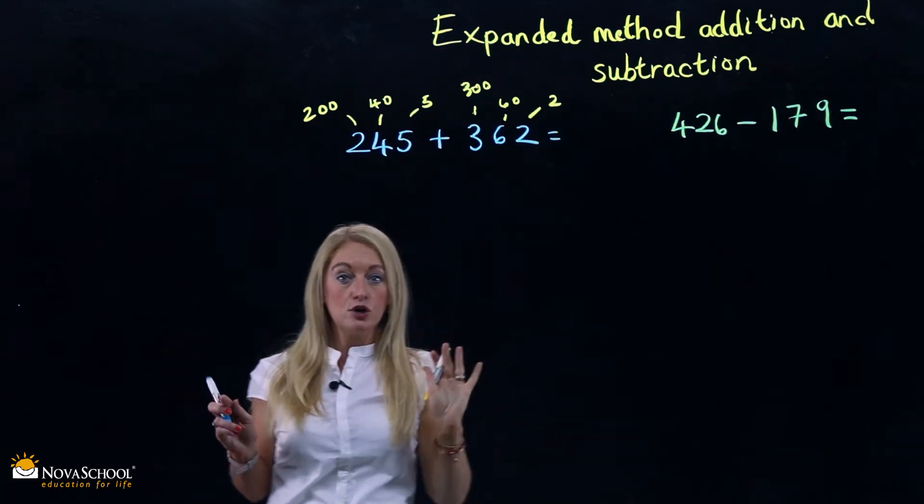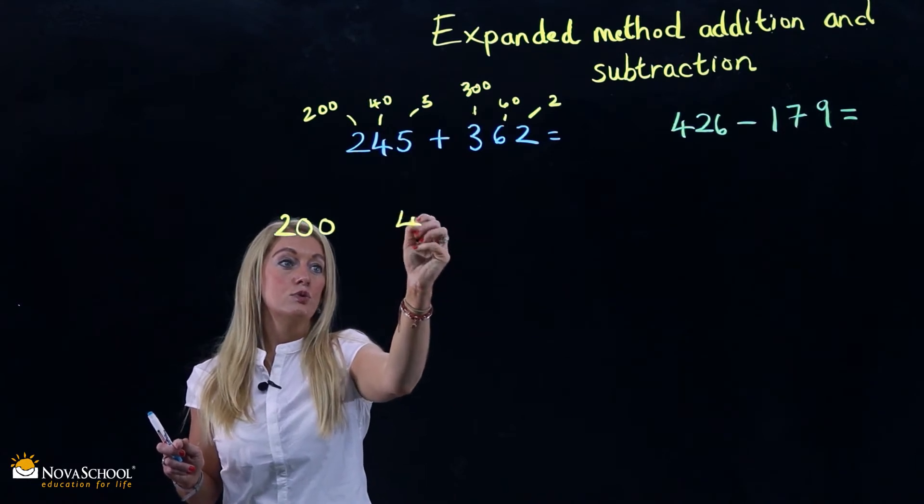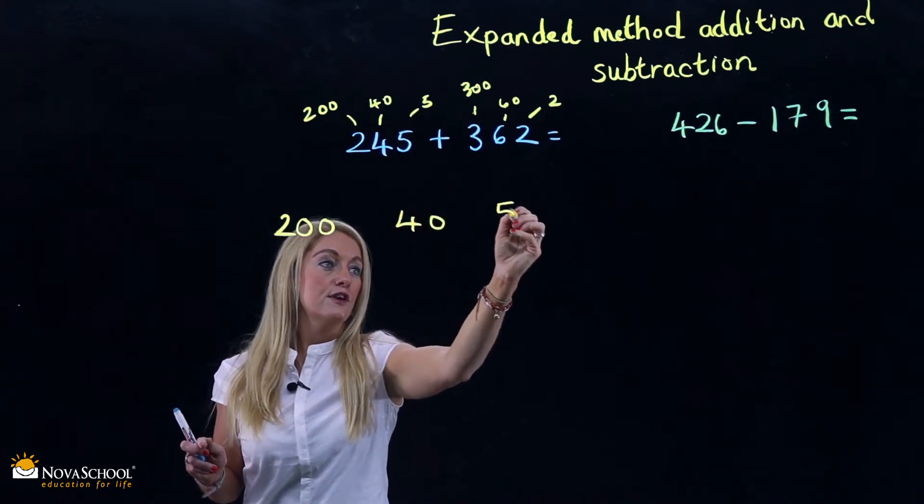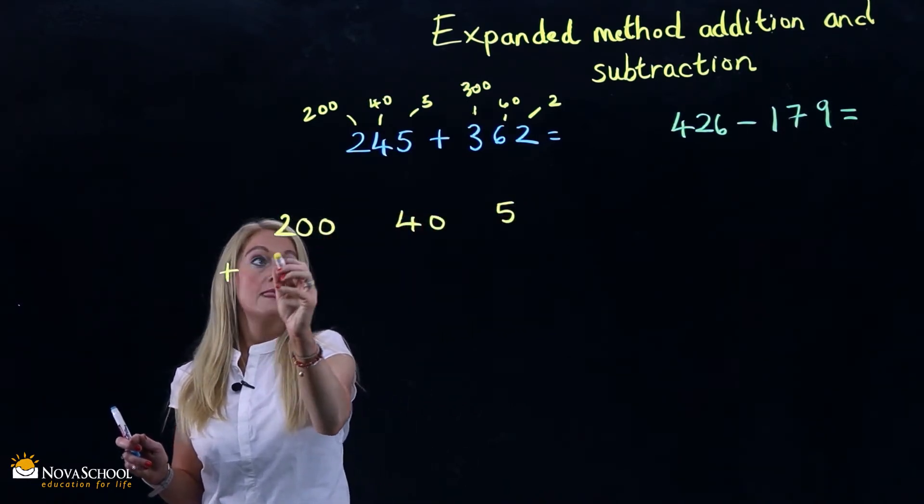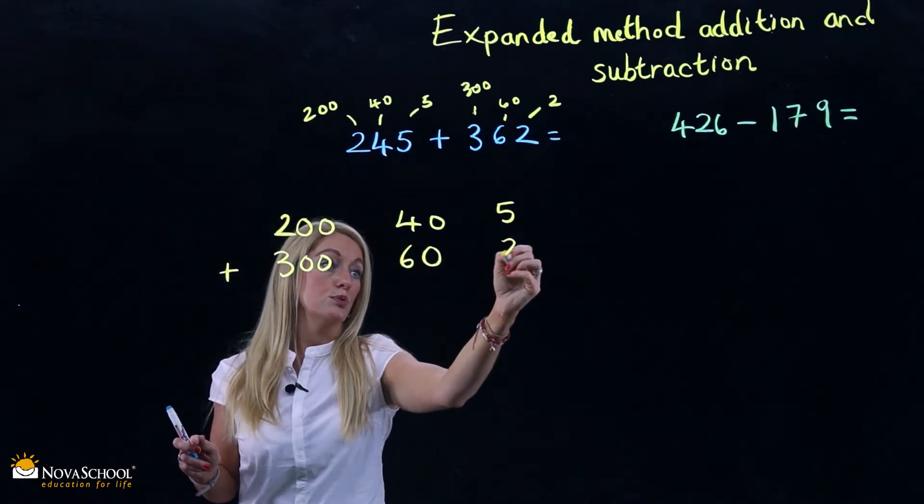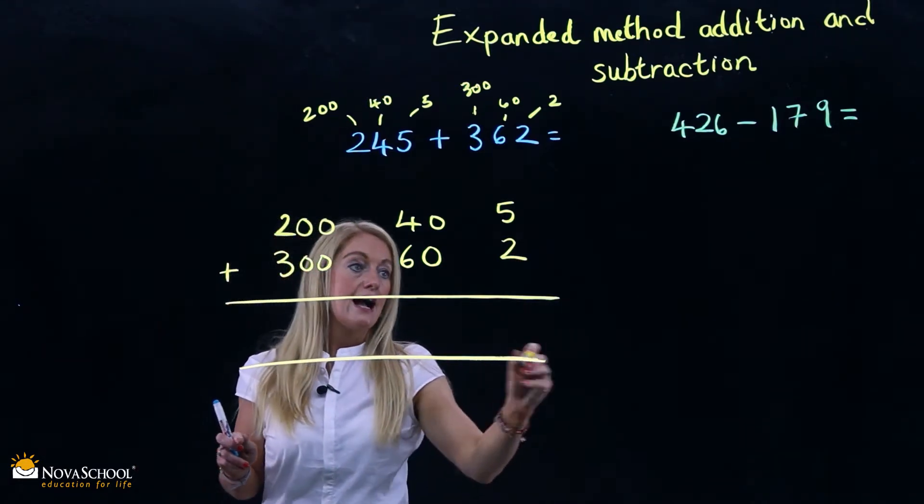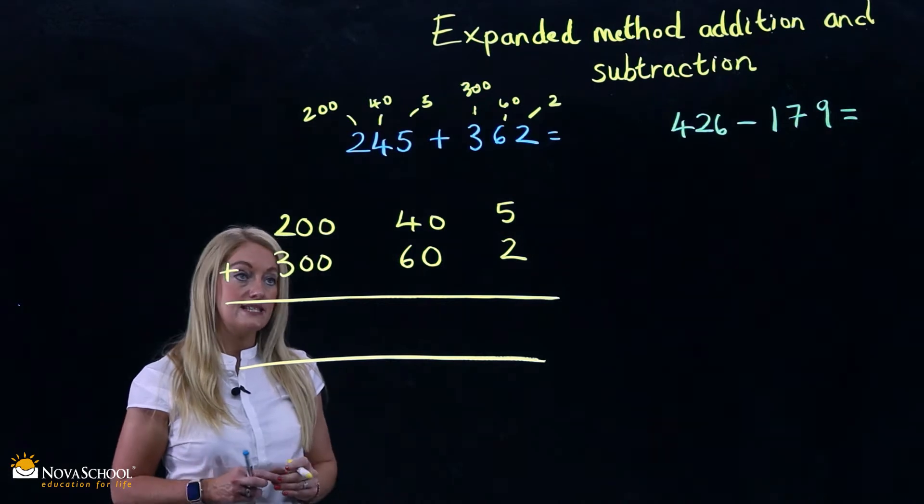Let's set it out in the correct way. 245 add 362. Okay, we do a ruler line underneath and then we add the numbers together.